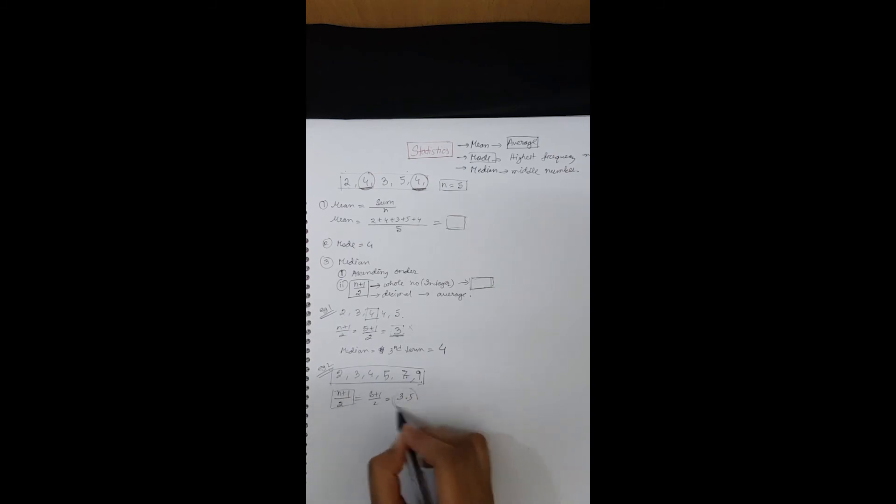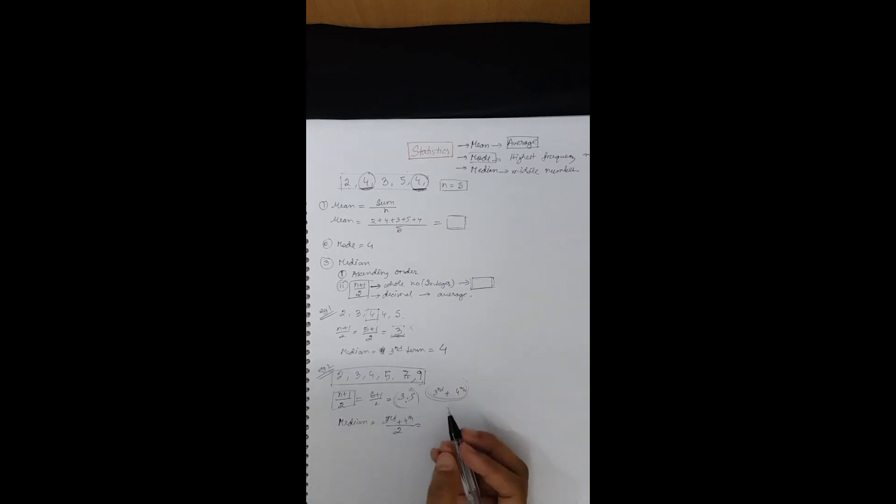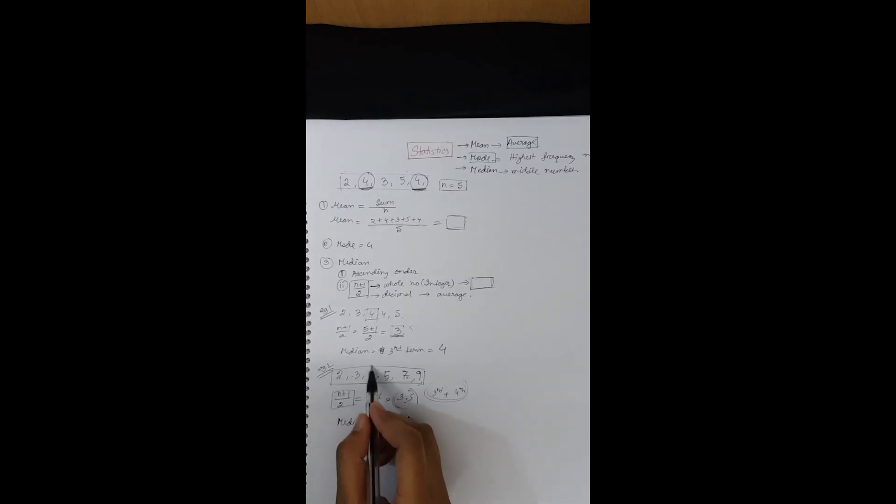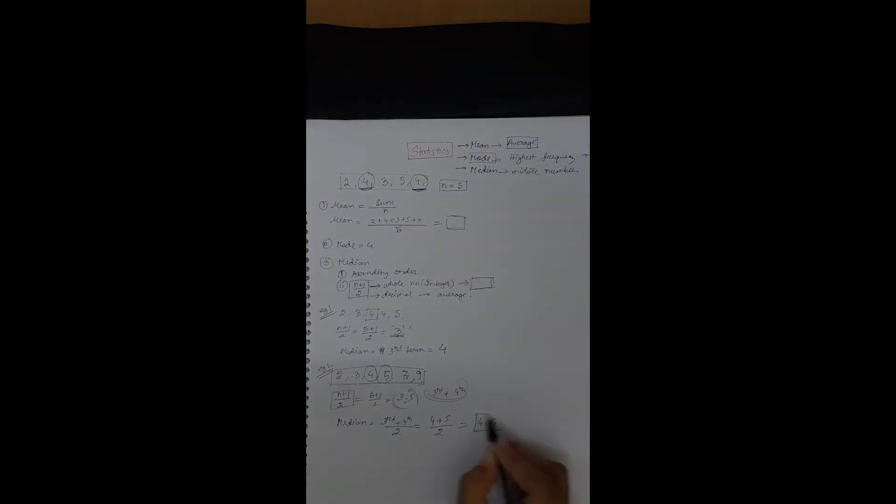It's a decimal, 3.5. It means it's not the third term, it's not the fourth term. We need to take an average of both numbers. Since 3.5 is between 3 and 4, this time median equals third and fourth divided by 2. So third number is 4, fourth number is 5. Therefore, median equals 4.5.